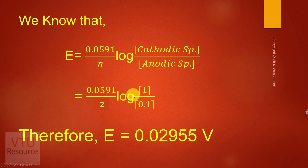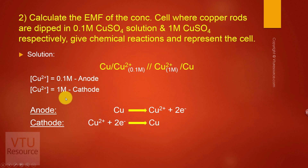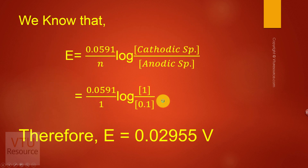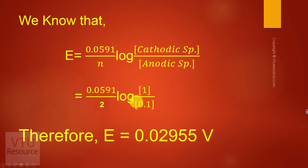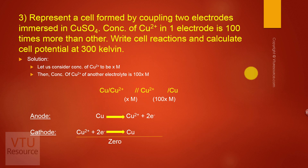We know that E = 0.0591/n × log(cathodic concentration / anodic concentration). So E = 0.0591/2 × log(1 / 0.1). Calculate: 0.0591/2 × log(10). Once we calculate we get the EMF value.